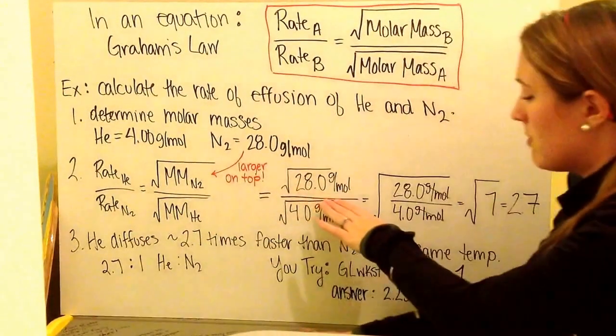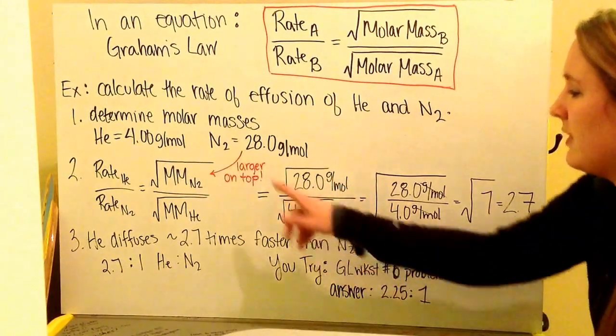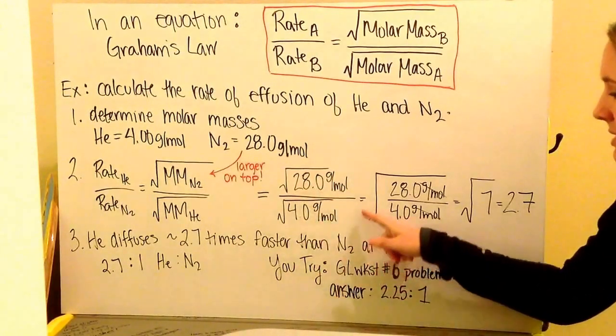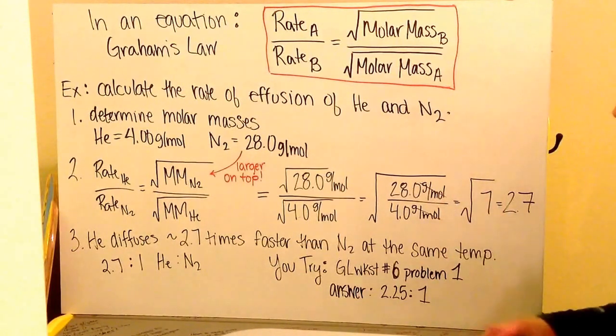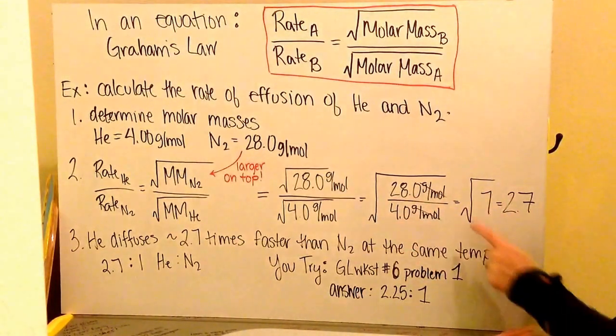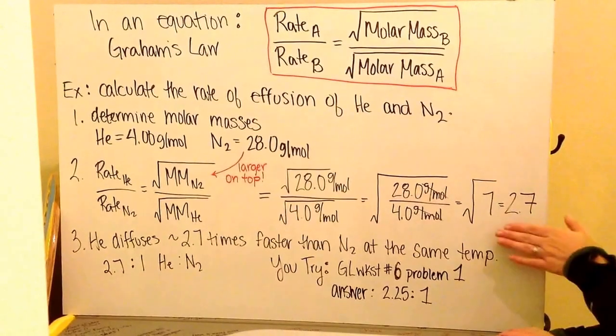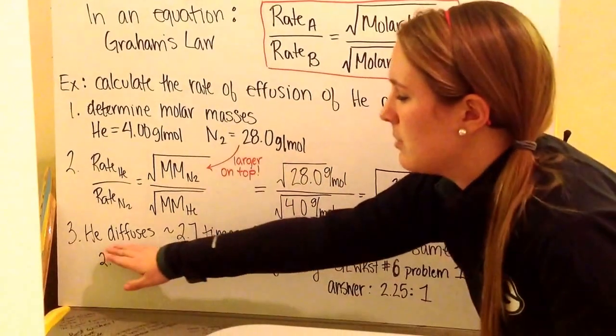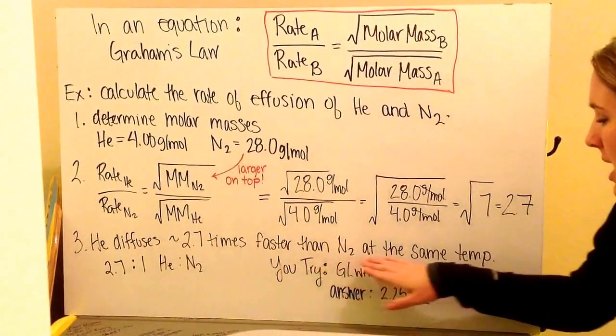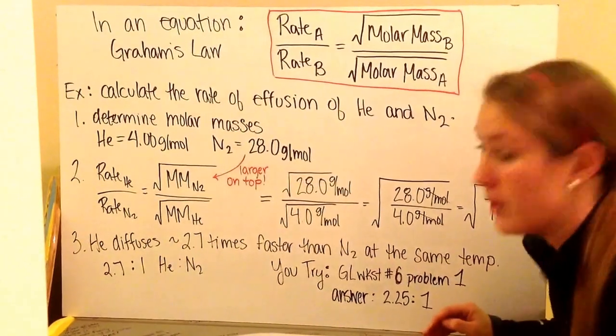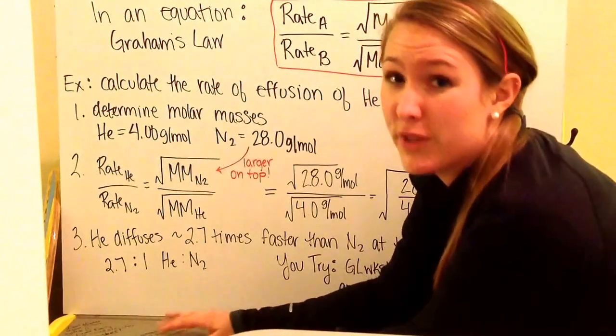So I plug in my molar masses, 28 in the top, 4 in the bottom, 28 for nitrogen, 4 for helium. If I have the square root of the top divided by the square root of the bottom, I can then take the square root of the entire fraction and leaving my numbers in the middle. So 28 divided by 4 is 7, so I then take the square root of 7 and I get approximately 2.7. What this means is that helium is going to diffuse approximately 2.7 times faster than nitrogen at the same temperature. So in terms of a ratio, my ratio is 2.7 to 1, helium to nitrogen in terms of the rates of diffusion.